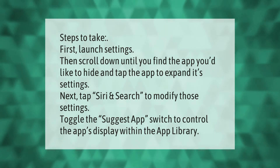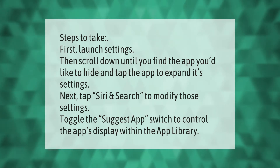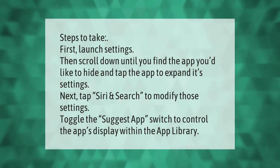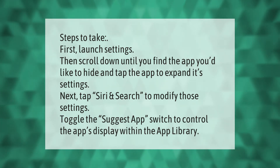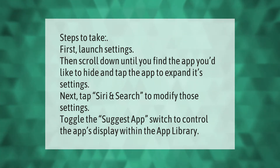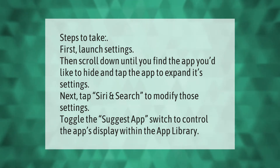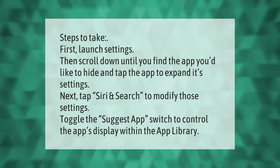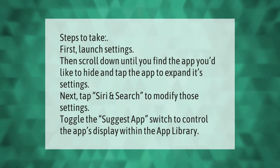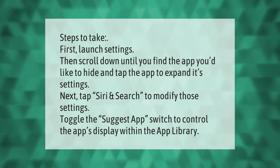First, launch Settings, then scroll down until you find the app you'd like to hide and tap it to expand its settings. Next, tap Siri and Search to modify those settings, and toggle the Suggest App switch to control the app's display within the App Library.